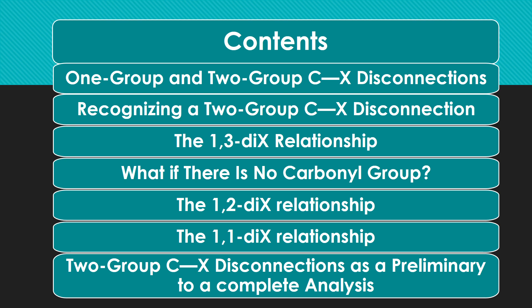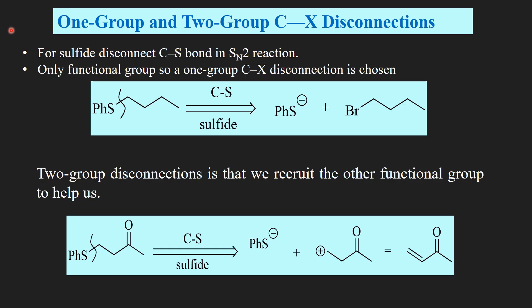The contents which we are going to study are: one-group and two-group C-X disconnections, recognizing the two-group C-X disconnection, 1,3-di-X relationship and what happens if there is no carbonyl group, 1,2-di-X relationship, 1,1-di-X relationship, and two-group C-X disconnection as a preliminary to a complete analysis.